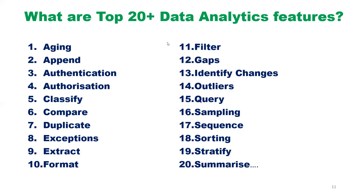These are the top 20 data analytics features — aging, append, authentication — arranged in alphabetical order. There could be more than 200 to 300 data analytics features, but if you apply the Pareto principle — the 80/20 rule — you'll find that the top 20 data analytics features would cover most of the data analytics which is performed extensively.